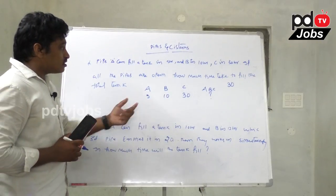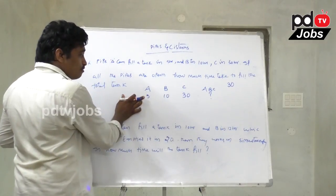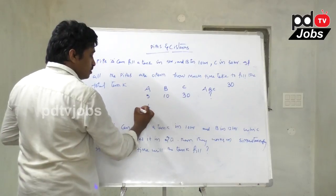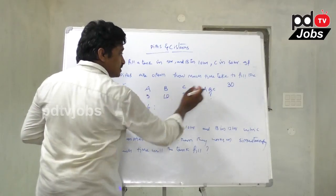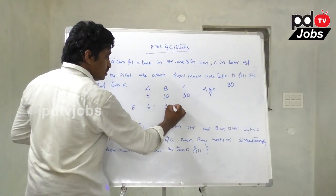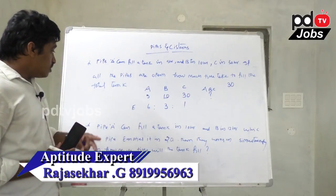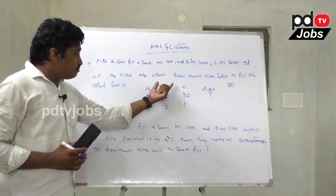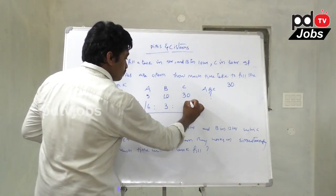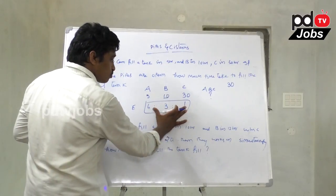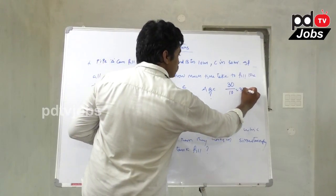Pipe A fills 30 liters in 5 hours, so efficiency is 6 liters per hour. Pipe B fills 30 liters in 10 hours, so efficiency is 3 liters per hour. Pipe C fills 30 liters in 30 hours, so efficiency is 1 liter per hour. Combined, they fill 6 + 3 + 1 = 10 liters per hour. Time to fill 30 liters = 3 hours.